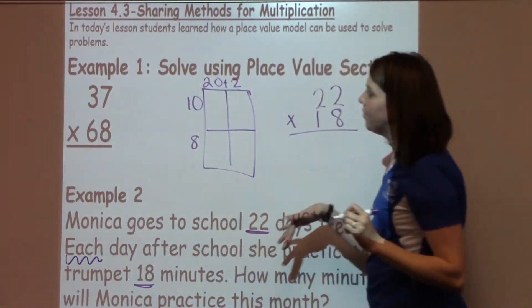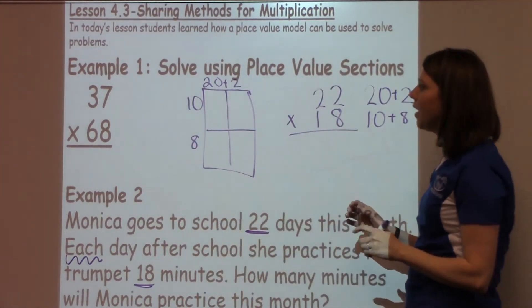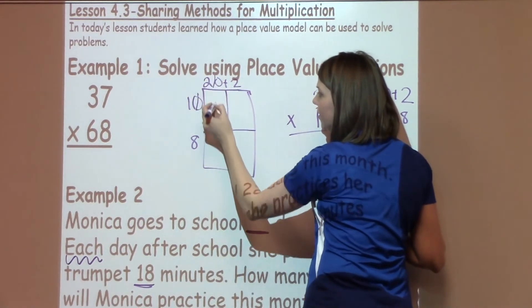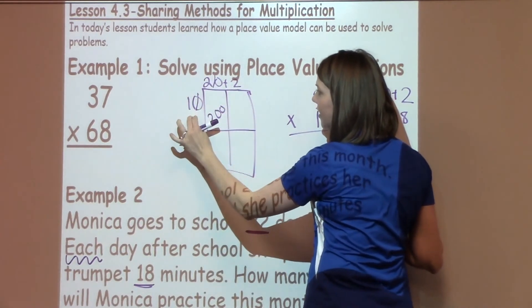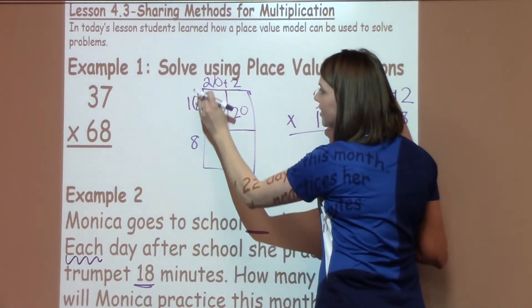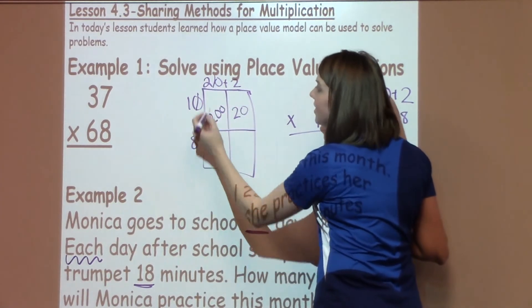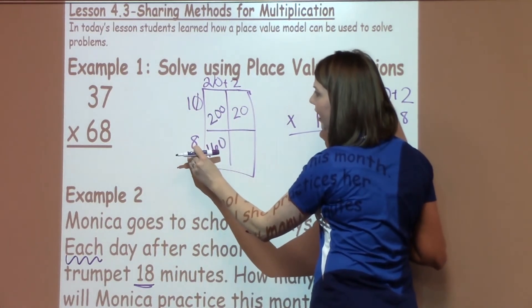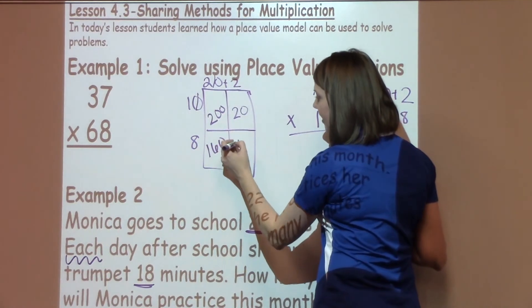Now I simply just need to multiply through like I did in the last problem. So I've got 1 times 2, which is 2. I need to add two zeros for an answer of 200. I've got 10 times 2, which is 20. I've got 8 times 20, which is 160. And then I've got 8 times 2, which is 16.